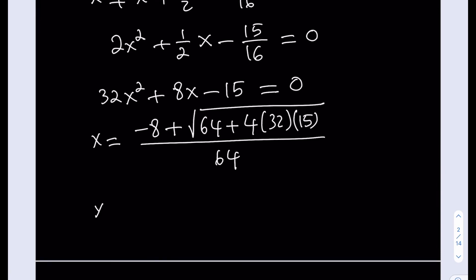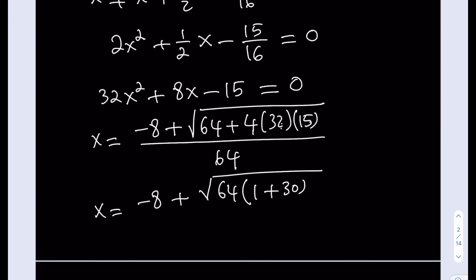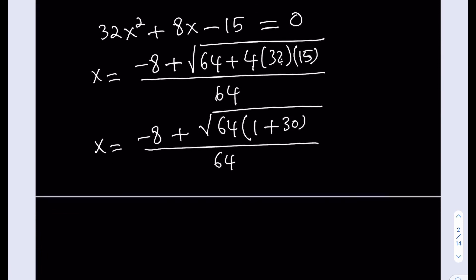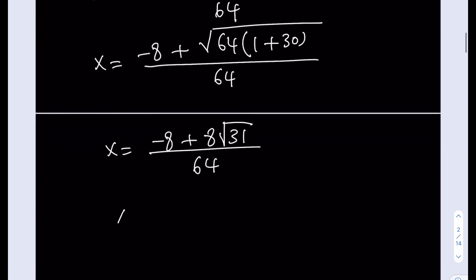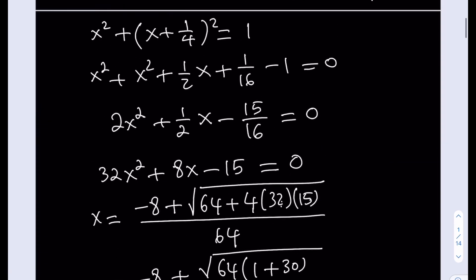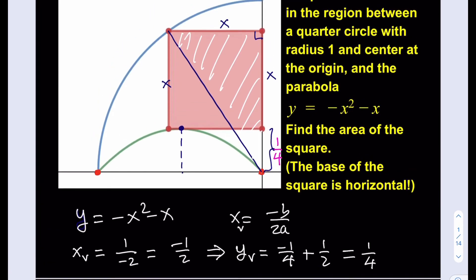Simplifying: I can factor 64 out from under the radical. The 64 gives a 1, and 4 times 32 times 15 divided by 64 gives 2 times 15 equals 30. So under the radical we have 64 times 31, and the square root of 64 is 8, leaving us with square root of 31. Dividing everything by 8: x equals negative 1 plus the square root of 31, all divided by 8. That's the side length.